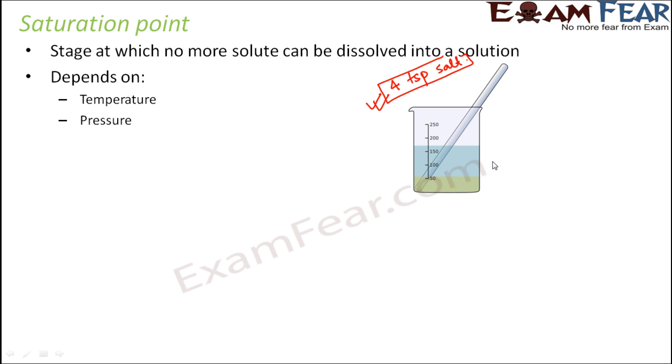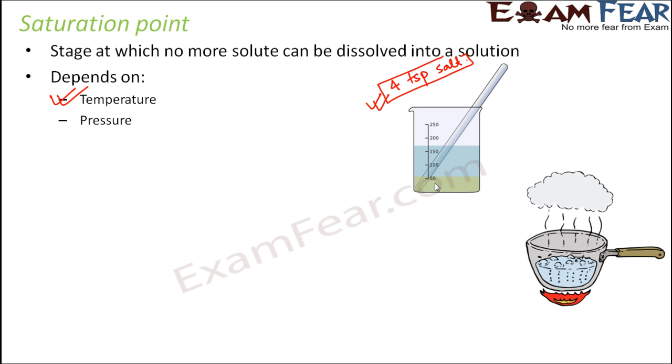Since temperature is one factor which defines the saturation point, by changing the temperature of the solution, we can change the saturation point as well. How can we change the temperature? One simple method is to heat the solution. Let's say you start heating the same solution.